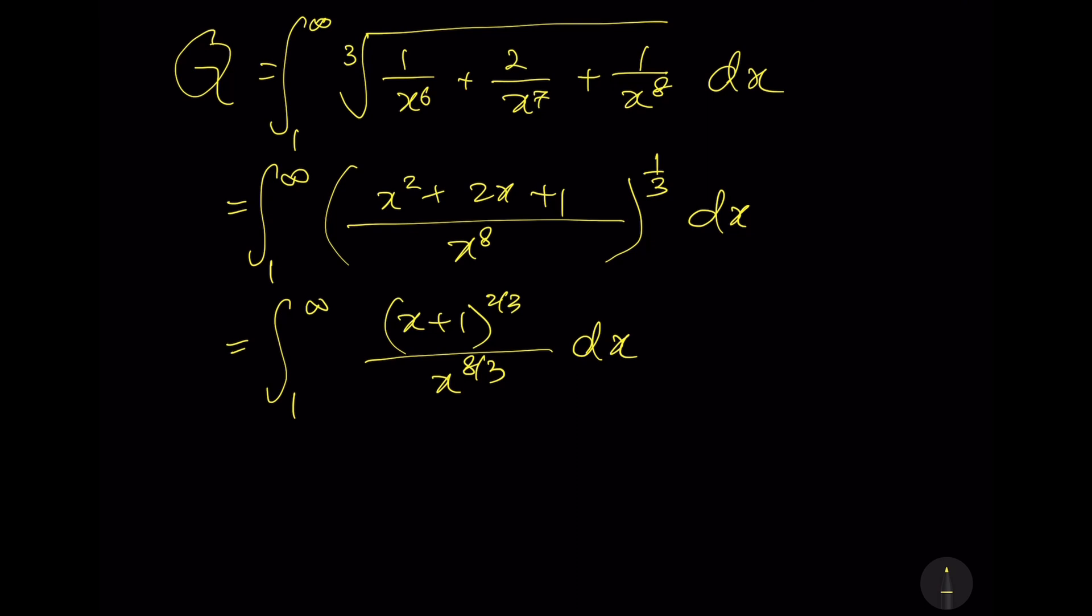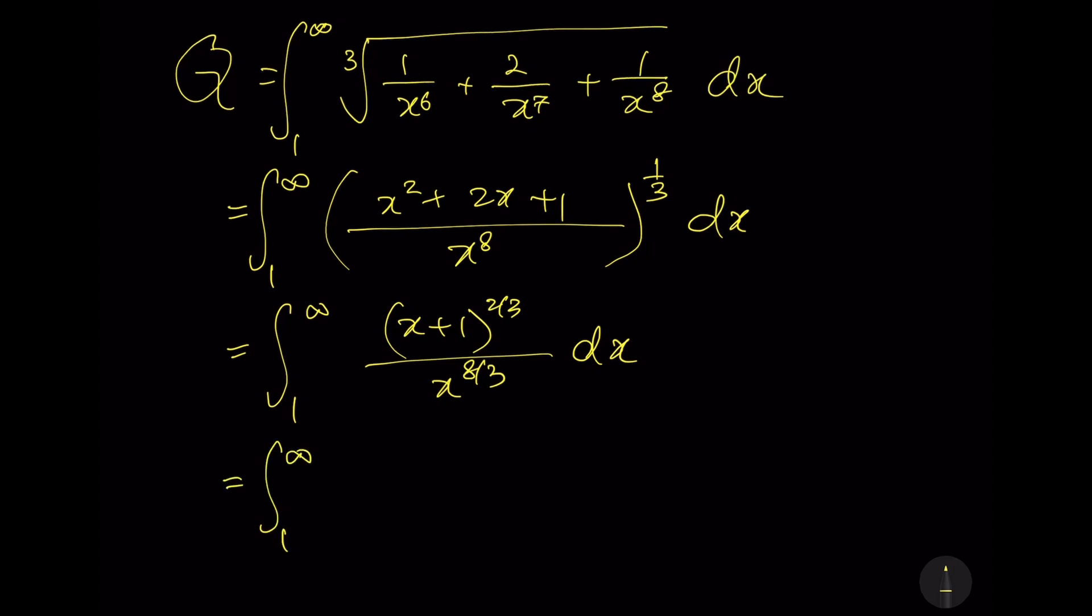So we need to further improve the integrand again, such as factor out x power 2 over 3 for the numerator. This means the numerator we have x power 2 over 3 multiplied by 1 plus 1 over x, and then power 2 over 3.